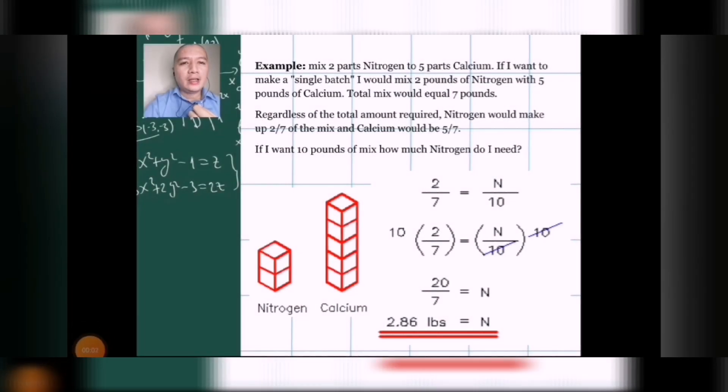Now for our second example of direct proportion, let's talk of some chemicals. Mix 2 parts of nitrogen to 5 parts of calcium. If I want to make a single batch, I would mix 2 pounds of nitrogen with 5 pounds of calcium. The total mix would equal 7 pounds. Regardless of the total amount required, nitrogen would make up 2 sevenths of the mix and calcium would be 5 sevenths.